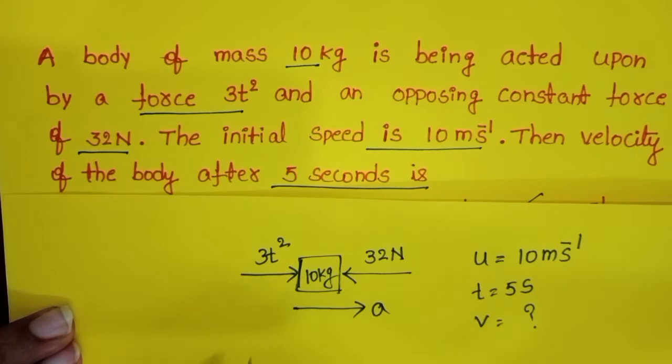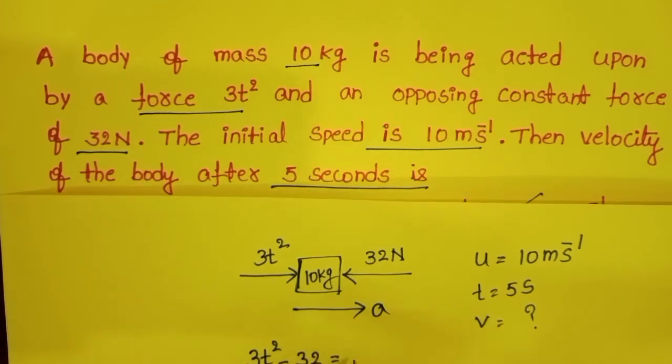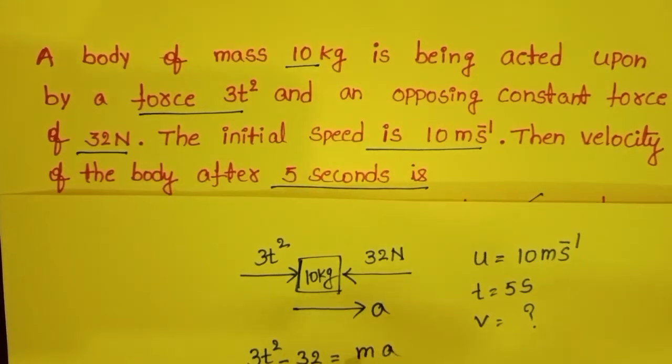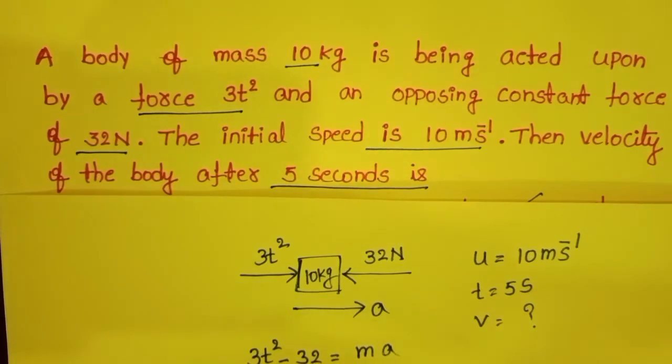From the free body diagram, 3t² - 32 equals the resultant force, which equals mass times acceleration. We know mass is 10 kg, and in place of acceleration we write the rate of change of velocity.